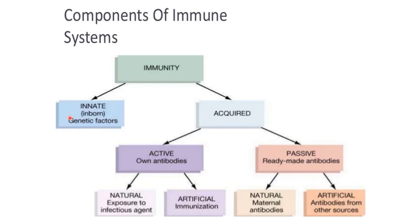Immunity can be classified as innate or acquired. Innate immunity is inborn — it is present from birth. Acquired immunity is not inborn; it is obtained after birth.